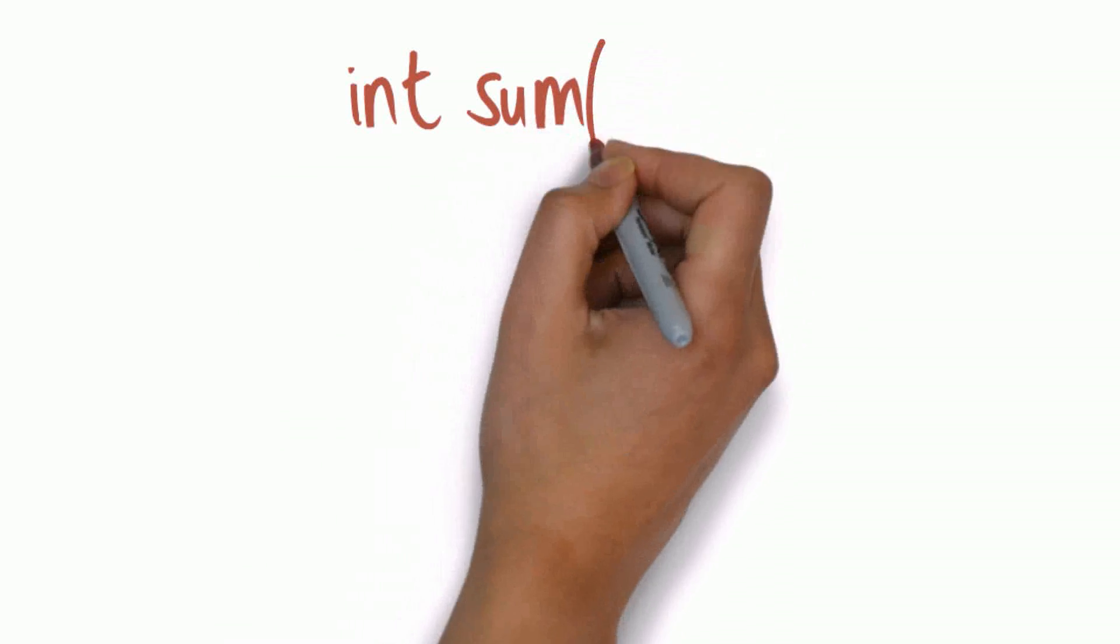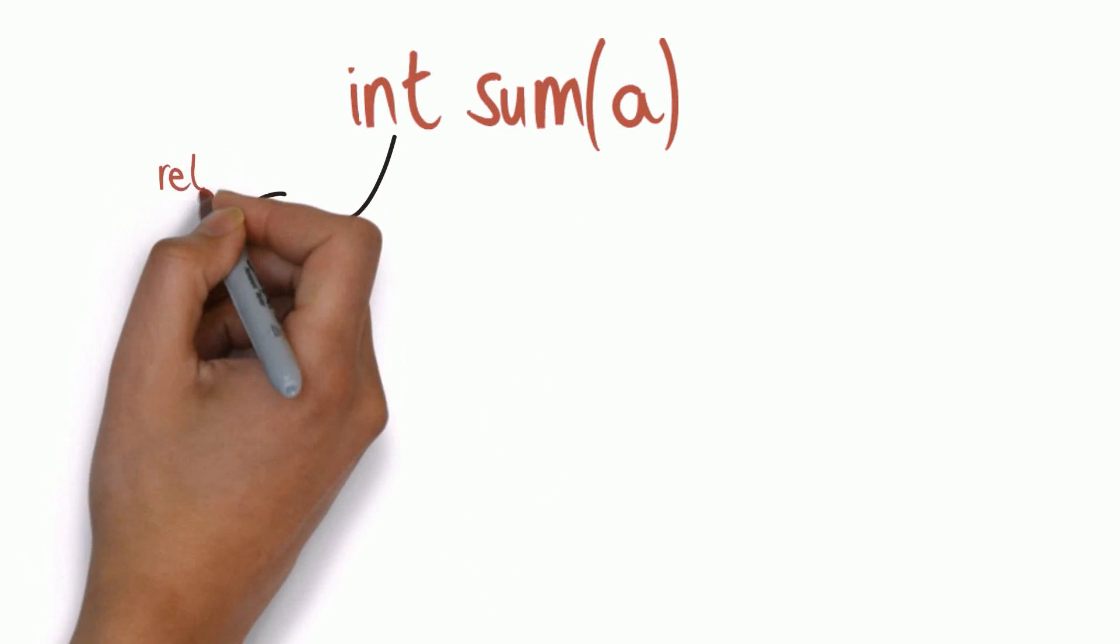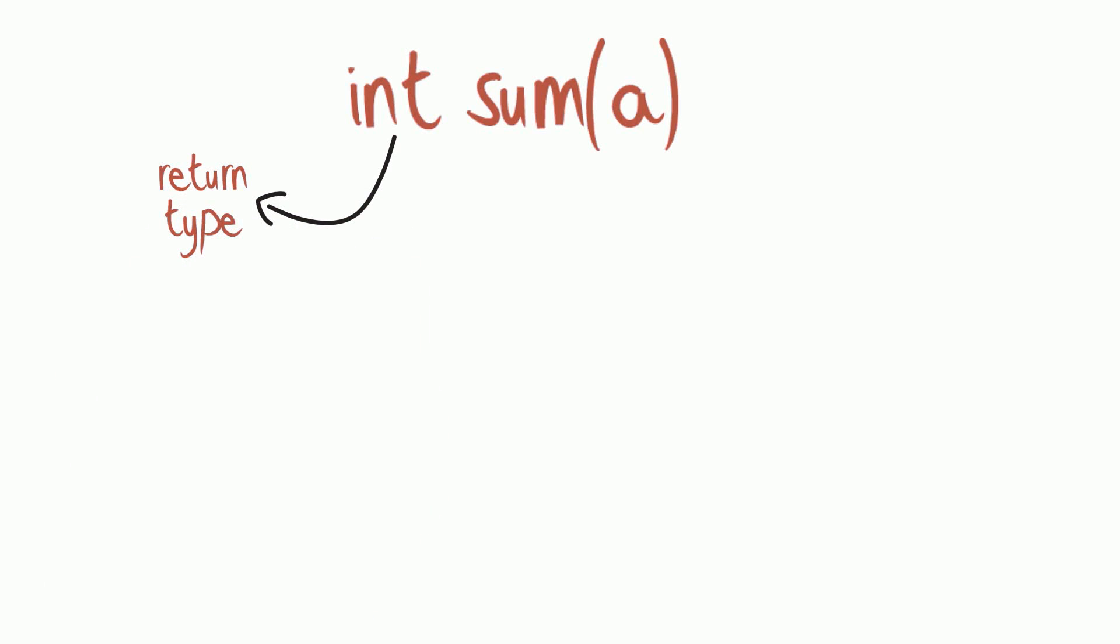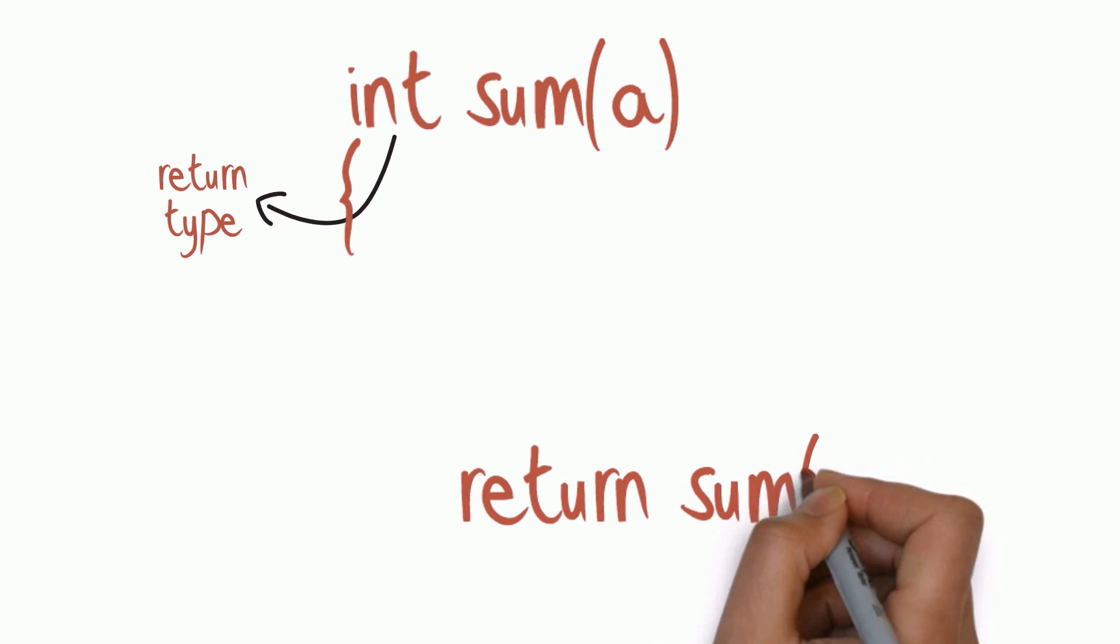For example, let us have a method named sum with the return type int. And within the body, let's have the statement return sum a-1.